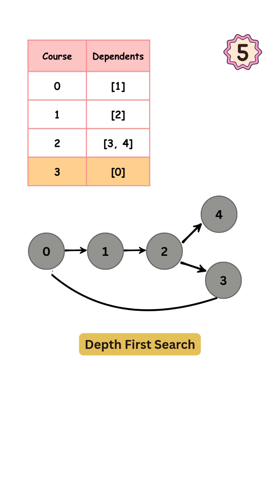Course 3 is a prerequisite for course 0. Now, imagine we are in the middle of our depth-first search and we have just discovered node 3. Next, we explore its connected node, which is node 0. But node 0 has already been discovered.